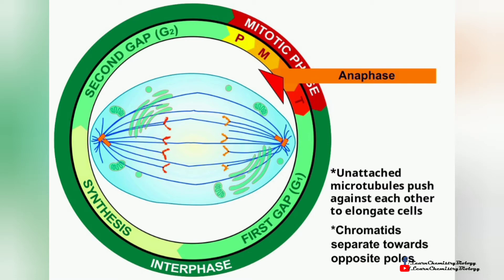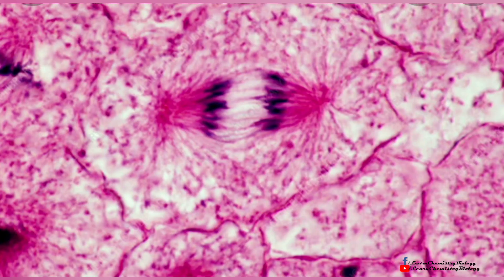Unattached microtubules push against each other to elongate the cell, and chromatids separate towards the poles. You can see chromosomes separate from the kinetochore. Now have a look at the microscopic picture of anaphase.